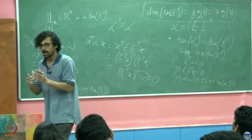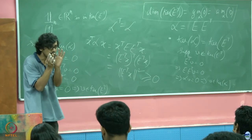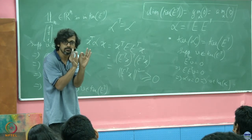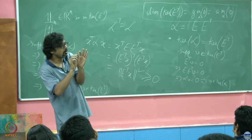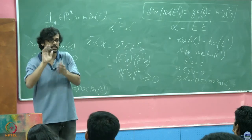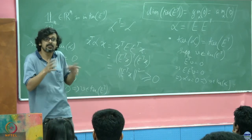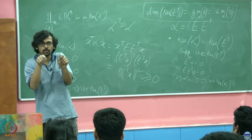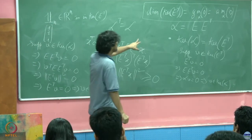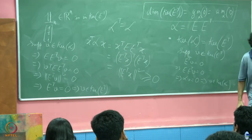If the second smallest eigenvalue of the Laplacian is also 0, then the graph is disconnected. But if it is non-zero, then the graph must be connected. So let us rule out the possibility of the kernel of E^T having dimension more than one for a connected graph.